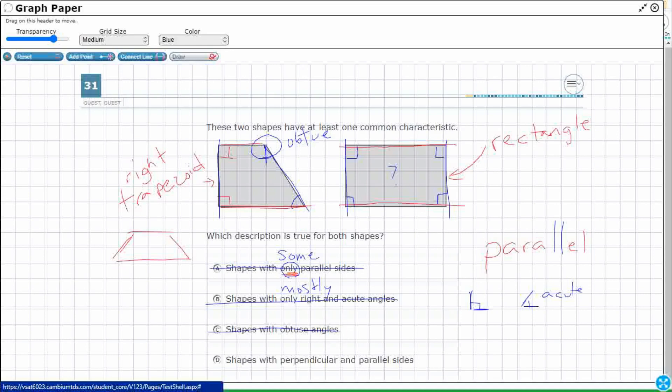All right. So let's hope it's D. We've got parallel. We already figured that one out right up here and then perpendicular.